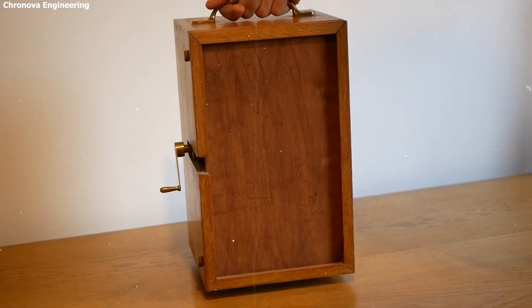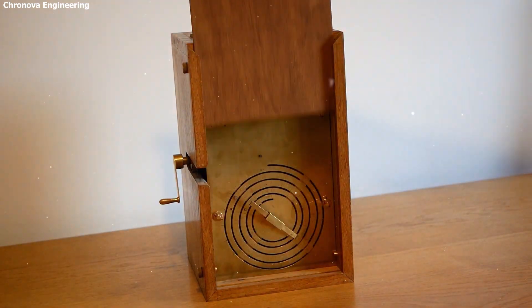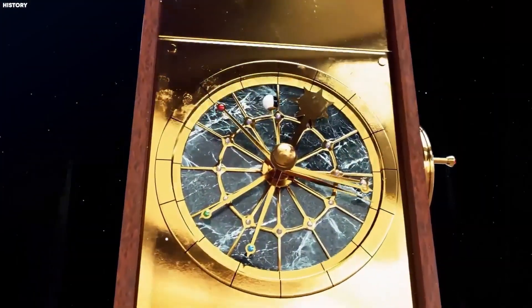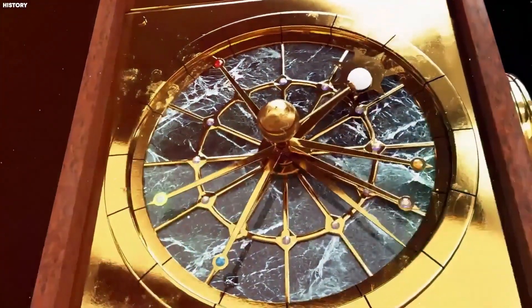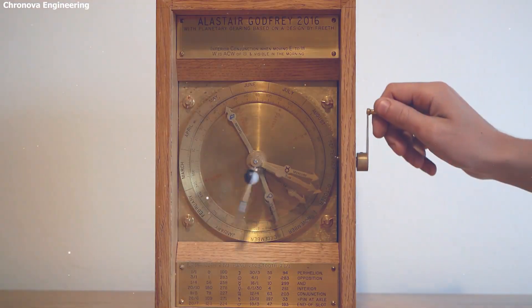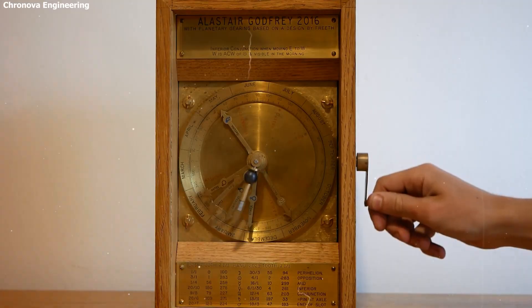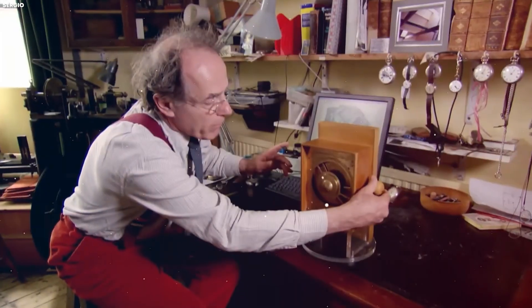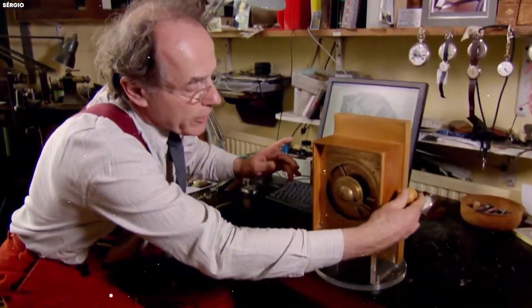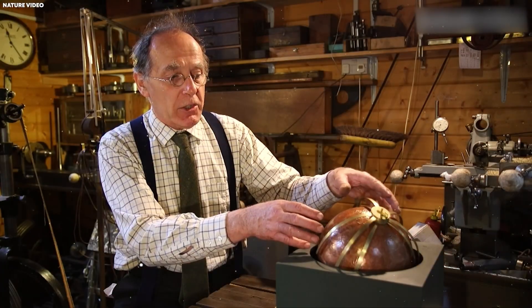The face of the ancient cosmos. Imagine standing before the Antikythera mechanism as it once was. At its center, a tiny dome representing Earth. Around it, six slender rings carried the paths of the Moon, Mercury, Venus, the Sun, Mars, Jupiter, and Saturn. Each planet marked by a small colored bead: golden for the Sun, blue for Venus, turquoise for Mercury.